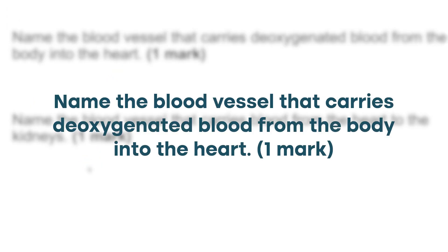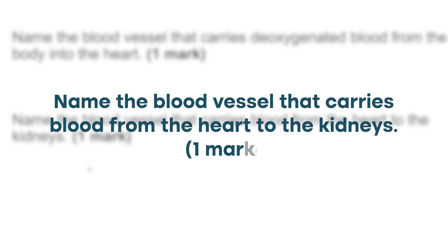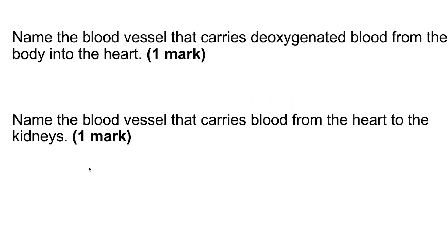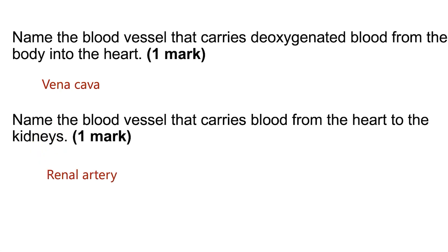Next: name the blood vessel that carries deoxygenated blood from the body to the heart, and name the blood vessel that carries blood from the heart to the kidneys. You need to know the key blood vessels: pulmonary artery and pulmonary vein (connecting to the lungs), renal artery and renal vein (connecting to the kidneys), and vena cava, aorta, pulmonary artery, pulmonary vein (connecting to the heart). Carrying deoxygenated blood from the body into the heart is the vena cava — 'vena' means vein, 'cava' means body. Going away from the heart to the kidneys is always an artery, so the answer is the renal artery.